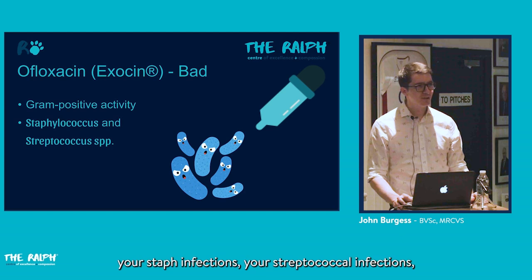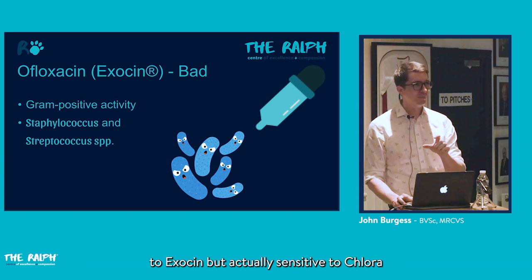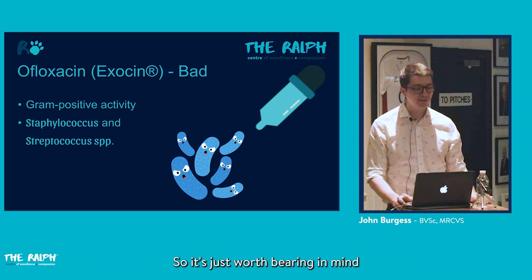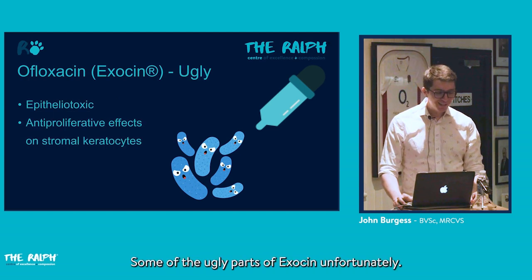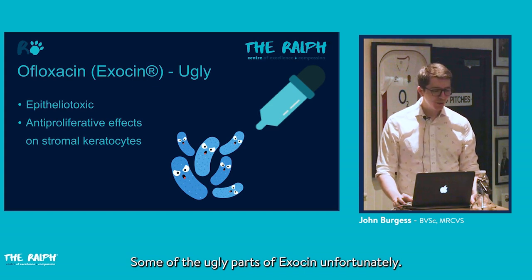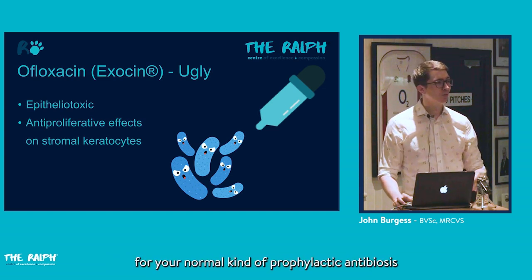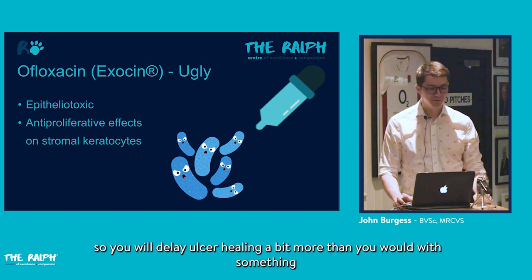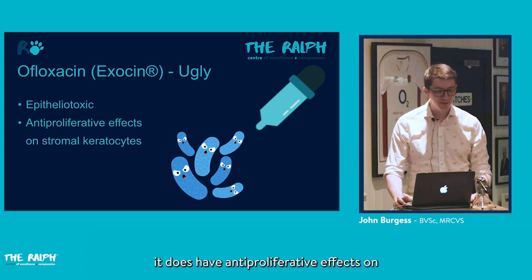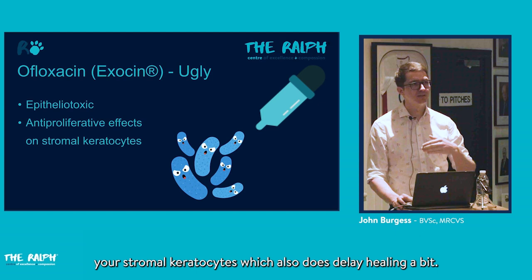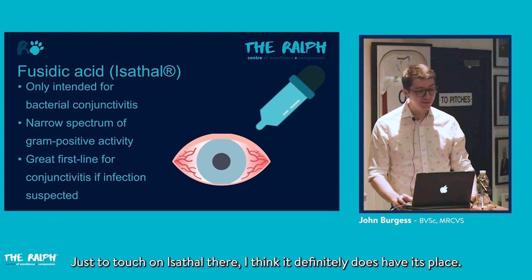One limitation of ofloxacin is that its gram-positive coverage is not as strong. Strep canis infections have come back resistant to ofloxacin but sensitive to chloramphenicol. Additionally, ofloxacin is more epitheliotoxic than chloramphenicol — it delays ulcer healing more and has anti-proliferative effects on stromal keratocytes, so we don't routinely jump to it as a first-line prophylactic antibiotic.